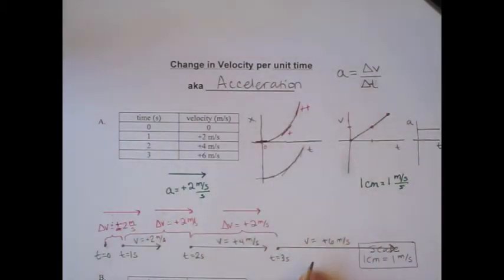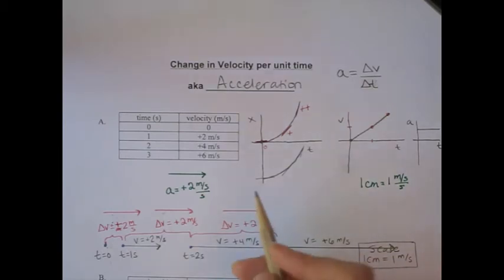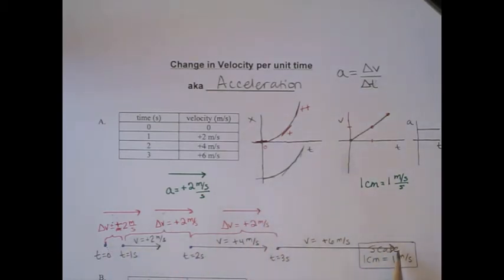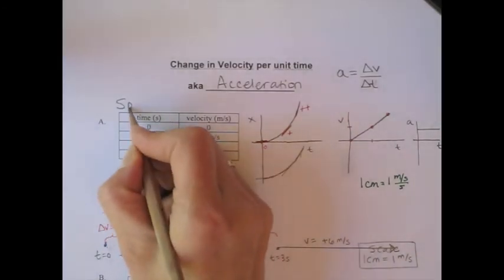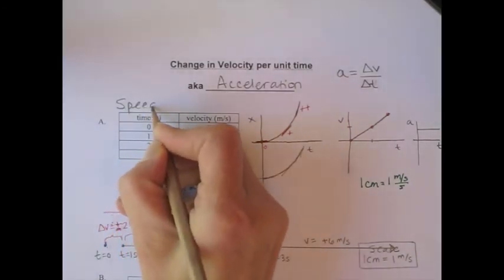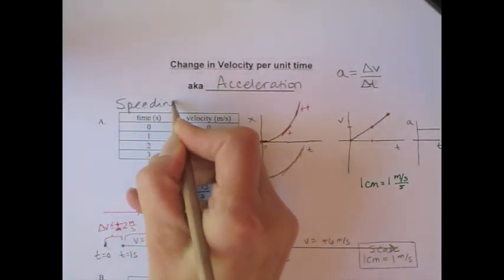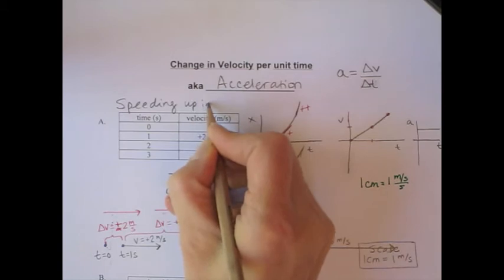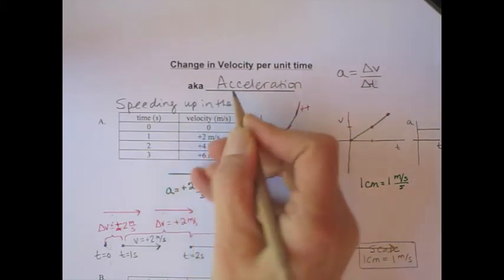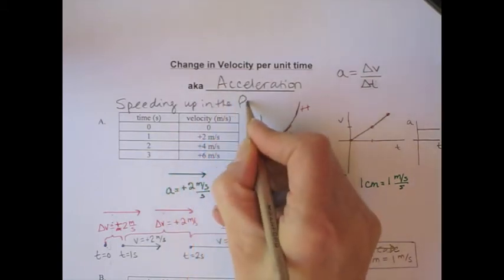So what kind of motion was this? From the graphs we can see the object is speeding up and moving in the positive direction. Motion A describes an object that is speeding up in the positive direction.